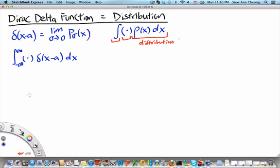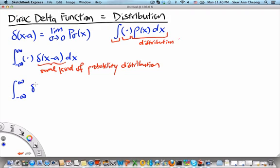When you treat the Dirac delta function, you should think of it as some kind of probability distribution. Our most familiar concept of distributions comes from the study of probability theory. So if we integrate just the Dirac delta function by itself, then by virtue of it being a distribution, it must be normalized. So this equals 1.